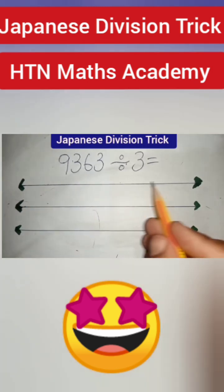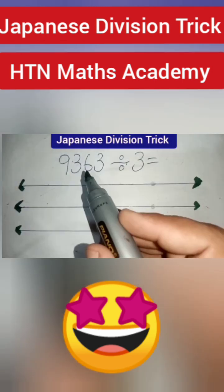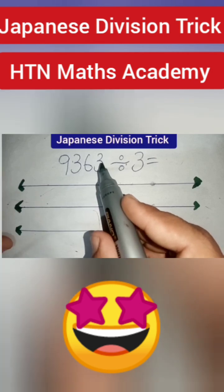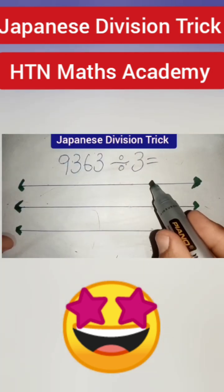First draw three lines. Second step, the given number is 9363. First digit is 3, so take three points on these lines.